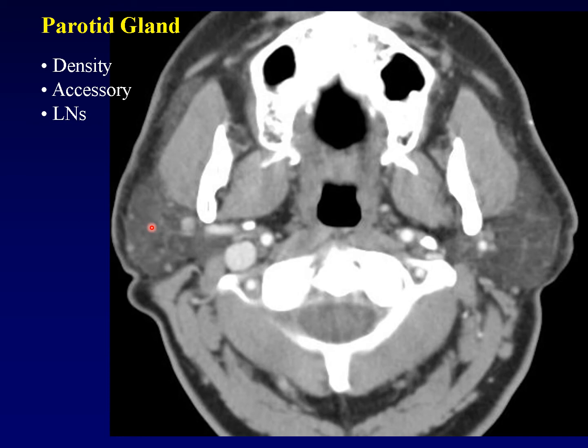The parotid gland is unique among salivary glands in that it has encapsulated lymph nodes. This makes the parotid gland prone to a variety of additional diseases because of the presence of those nodes.